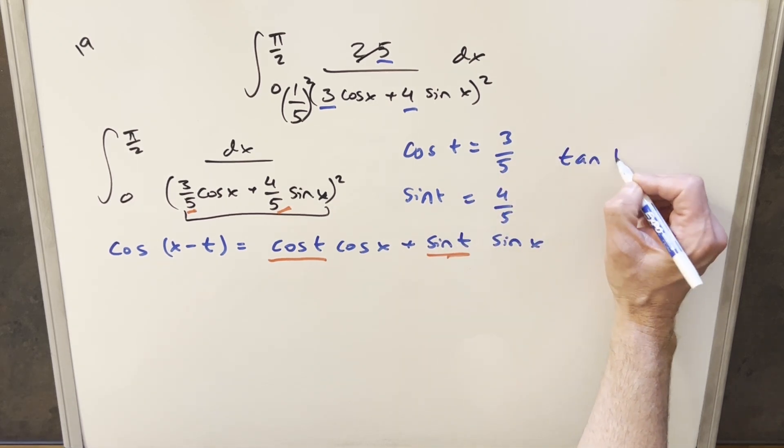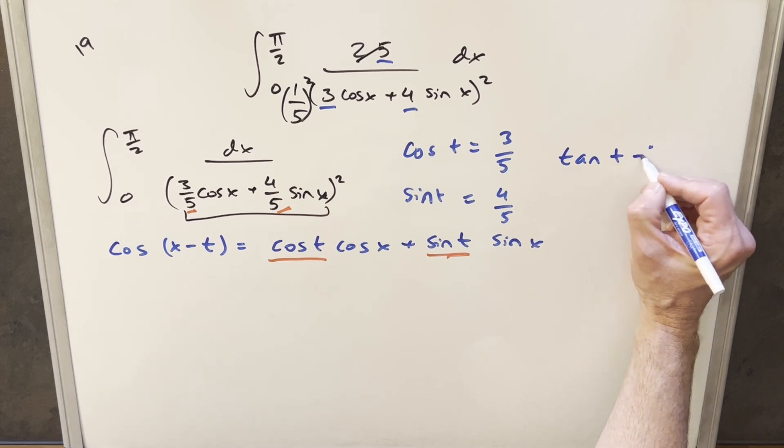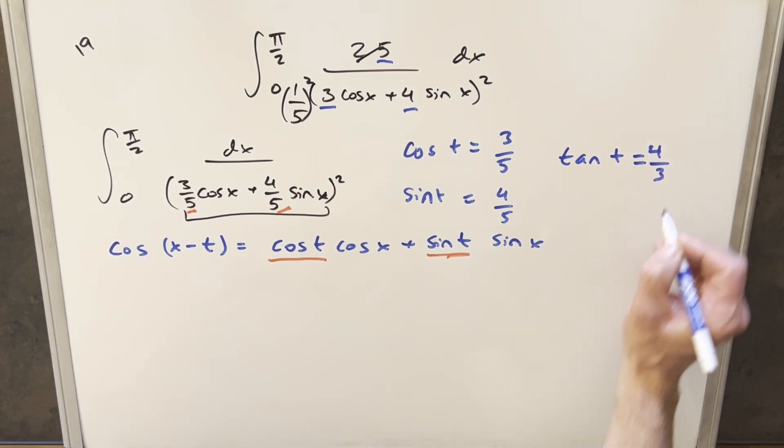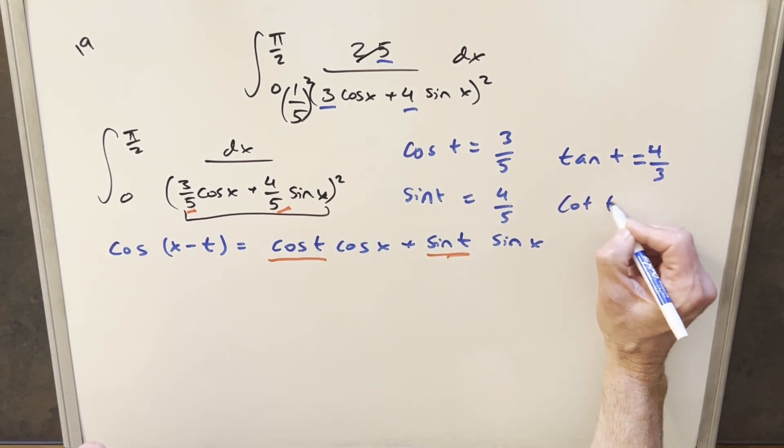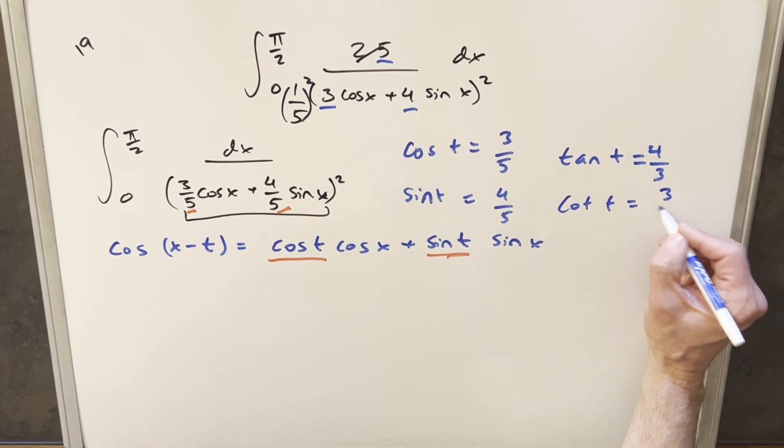We could actually get a value for tangent. So tan of t is going to be equal to 4 over 3. And then even for cotangent of t, that's going to be just a reciprocal or 3 over 4.